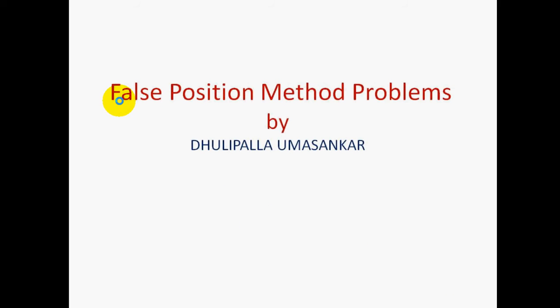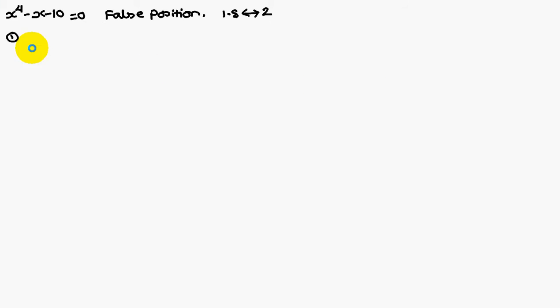Today we are going to discuss the false position method problem. Given that x^4 - x - 10 = 0, we have to find out the root that lies between 1.8 and 2.